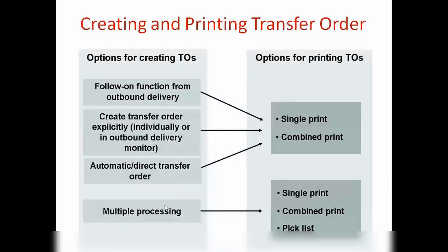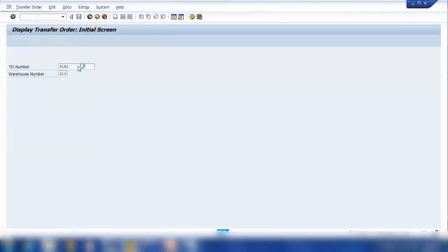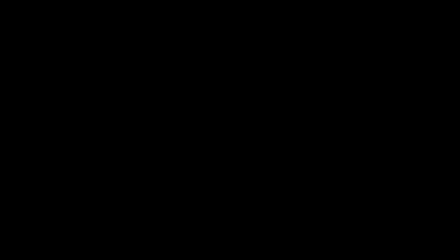There are many automations available for picking and printing transfer orders. For example, once a transfer order is created, it can be automatically printed. As a follow-up function, you can print it manually as well. The left-hand side shows the different ways to create a transfer order, and the right-hand side shows the printing options. Let's look at what the different ways are to create a transfer order.